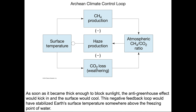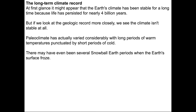The long-term climate record, if viewed as one of stability, is incorrect. If we look at the geologic record in detail, we see variation in climate throughout Earth's history — climate has always changed and always will. Paleoclimate has actually varied quite substantially, with long warm periods called greenhouse climates and short cold periods called ice house climates. Today we're in an ice house climate.